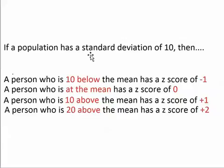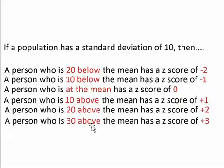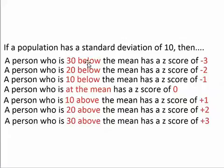If the class has a standard deviation of 10, then a student who is 20 above the mean would be two standard deviations above the mean and would have a z-score of plus 2. Because if you start at the mean and you go up by 10 and you go up by 10 again, you've gone up by 20. Similarly, a student 20 below the mean would have a z-score of minus 2. A person who is 30 above the mean would be three standard deviations above the mean with a z-score of plus 3, and a student 30 below the mean would have a z-score of minus 3.